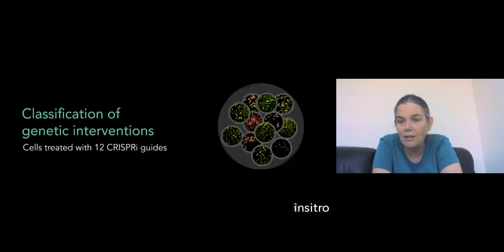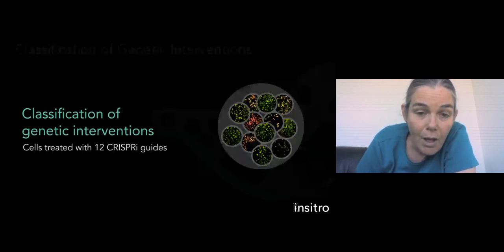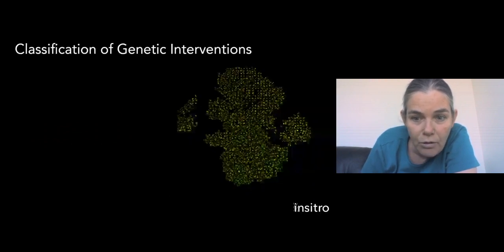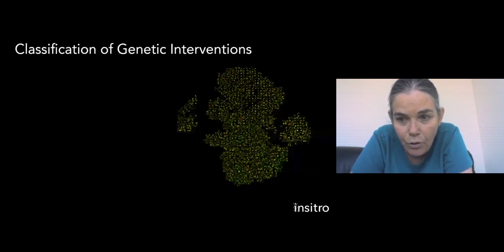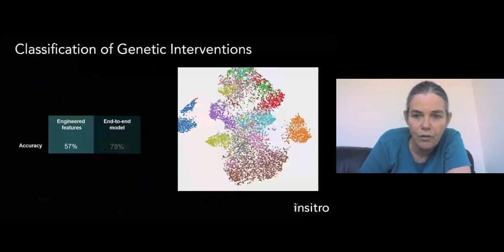So what we did here is we took a bunch of, in this case, identical cells. We subjected each of them to a different genetic intervention using a technology called CRISPR inhibition, which reduces the expression of a single gene by about 20 to 40%. This is a pretty subtle intervention because it only touches one gene and only reduces expression by a relatively modest amount. And so it's hard to look at those cells and really tell the difference. But it turns out that machine learning was actually quite nicely able to do that. And we were able to take those 12 interventions and identify what the genetic perturbation was with an accuracy of 70%. By comparison, a state of the art approach using engineered features that were engineered by a human expert in cell biology was only able to achieve an accuracy of 57%.